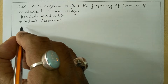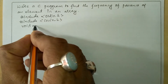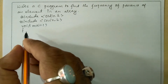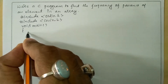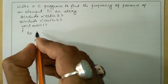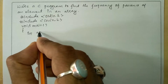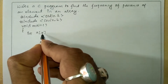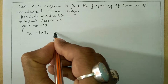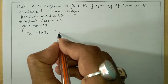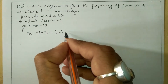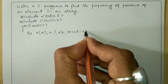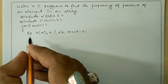Now let us write the void main function with curly open brace, and here we are going to declare all the variables. For example, int a[10] — this is an array of size 10. Next, n, i, and element whose frequency is to be checked, and next I will take one more variable called count set to value 0.